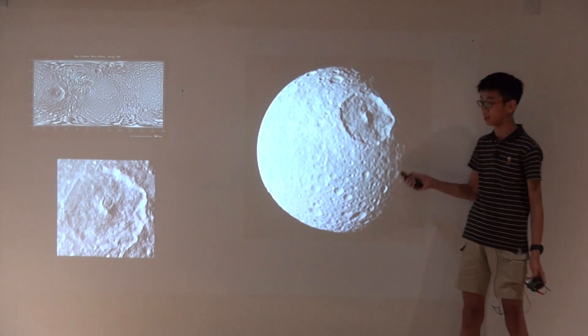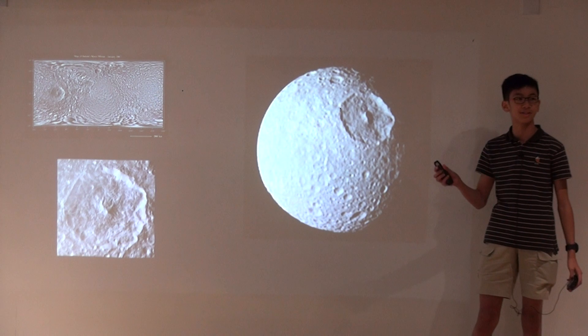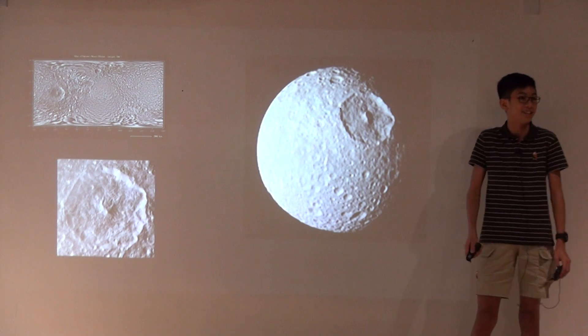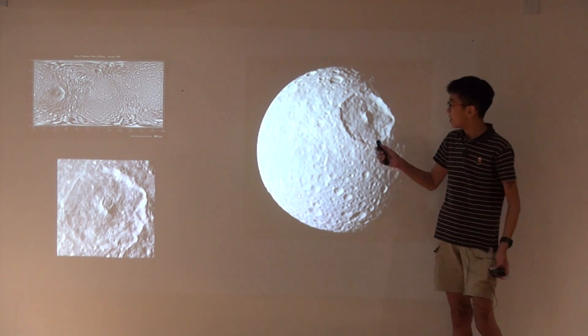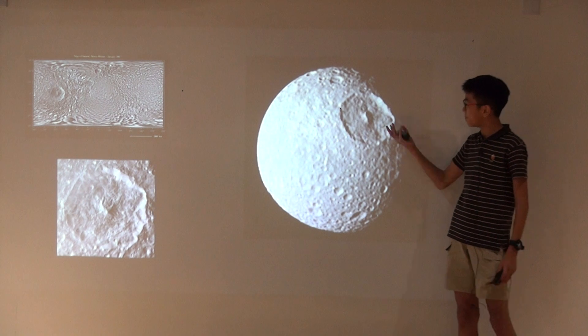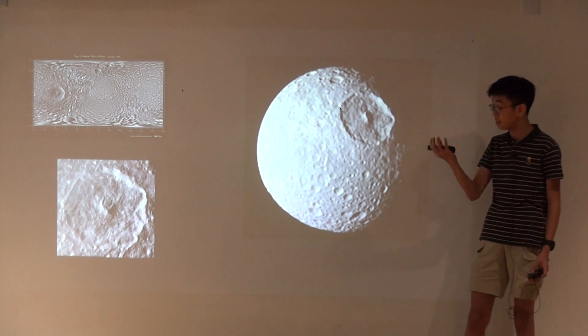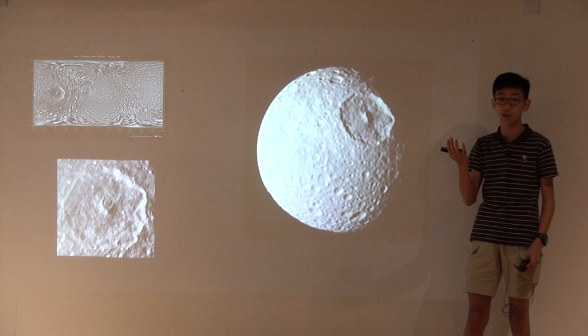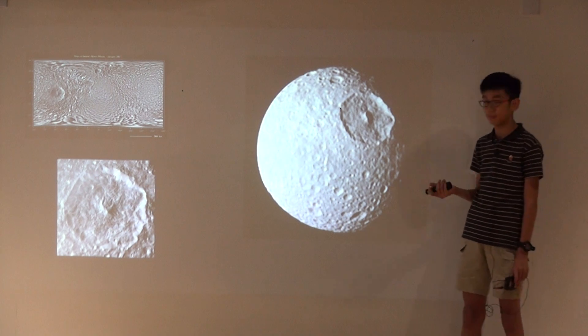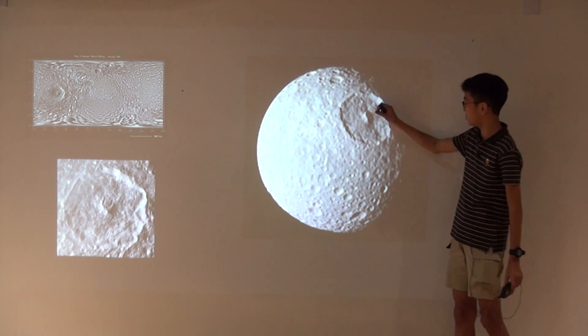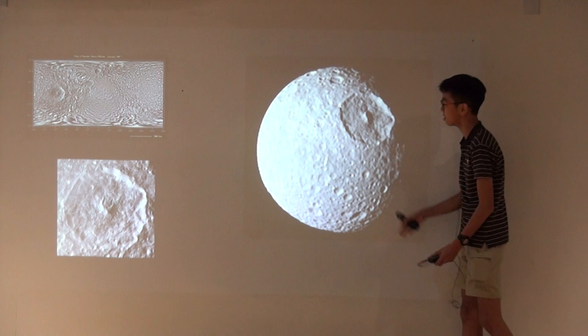And next we will be talking about Mimas. So it has a really big crater in the moon which almost caused the moon to split apart, which is really interesting. You know there's a big lump.